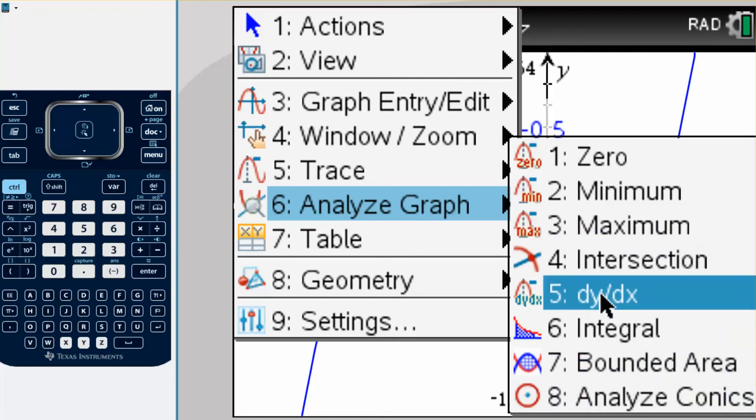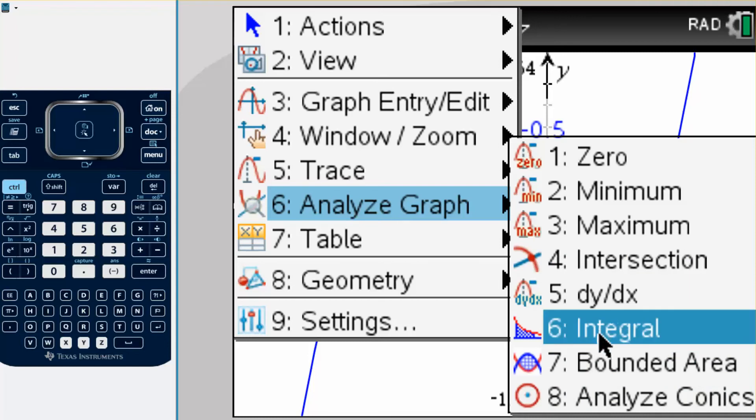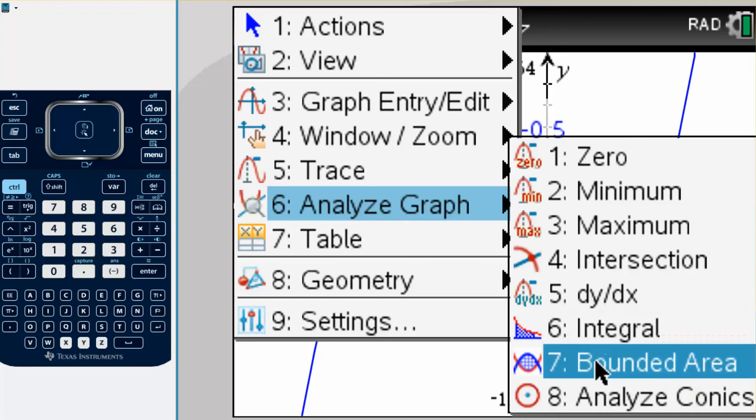This is a derivative if you go in the calculus, integral would find the area under the graph, and bounded areas if you have two graphs is the area that they intersect. We're not going to do conic sections.